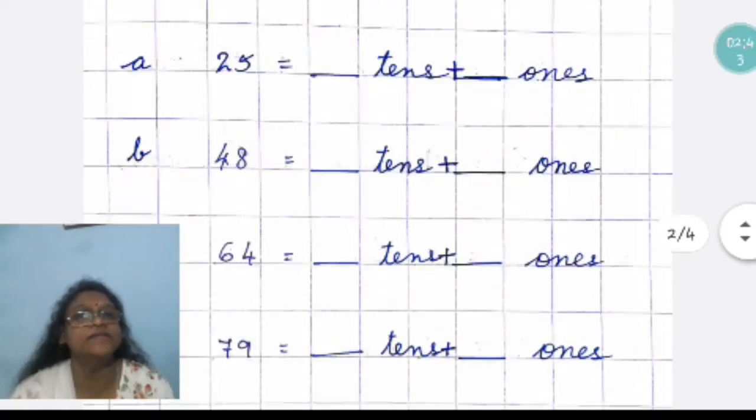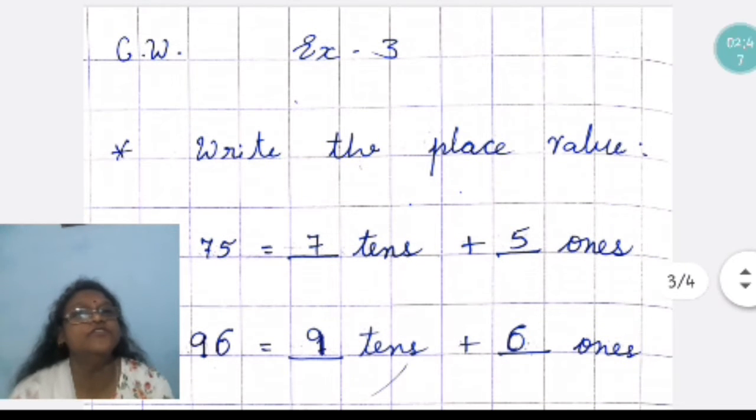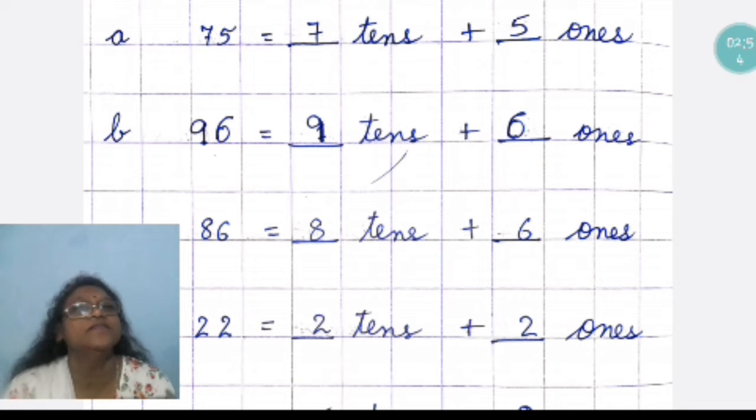Now, third exercise. You have to see, 75. So, can you tell me what is 5 and what is 7? Yes. 5 is ones and 7 is tens.